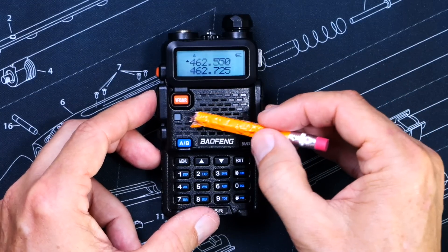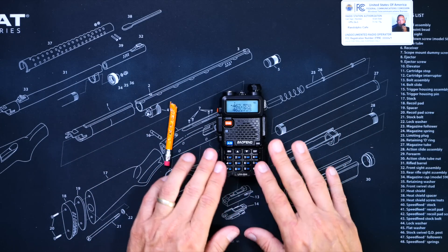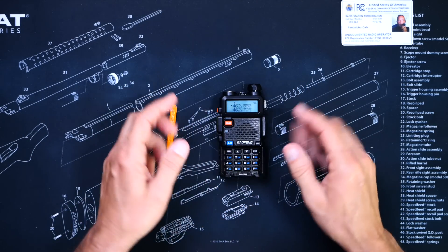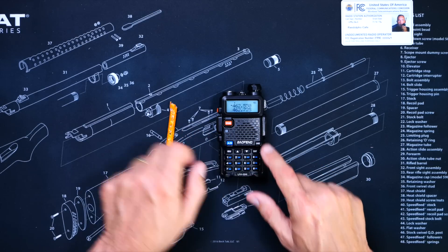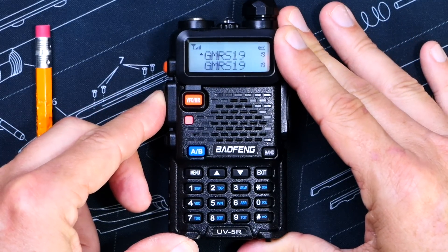Notice the lack of any transmit confirmation indicator. So the key here is to make sure that you are on a channel or frequency that your specific radio can transmit on, and confirm that the radio is actually transmitting.